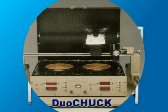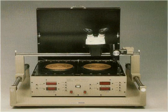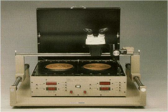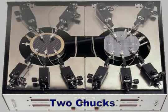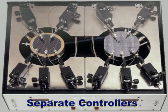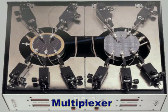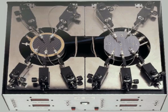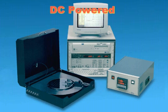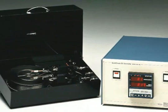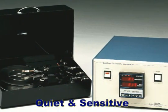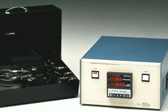Our DuoChuck integrated hot chuck system is the first hot chuck system designed by a CV plotter company for use exclusively with computerized CV plotters. In one dark box enclosure, the MDC DuoChuck combines two independent hot chucks, all temperature controller and stress supply electronics, and a multiplexer. The MDC DuoChuck DC hot chuck system provides unique capabilities for advanced MOS device measurements.